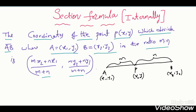Diagrammatically, here we have a line segment AB divided by P in ratio m:n. So AP is m, PB is n. Then the coordinates of P will be (mx2 + nx1)/(m+n) comma (my2 + ny1)/(m+n). This is the section formula.